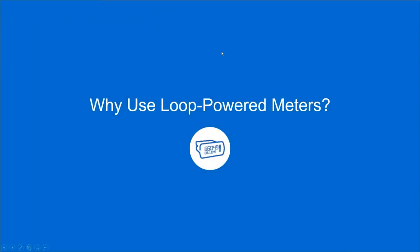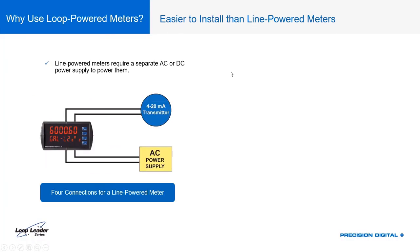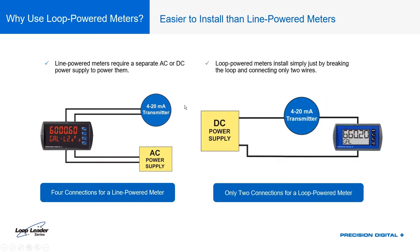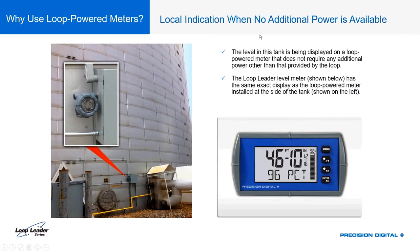Why do people use loop power meters? The most important reason is that they're easier to install than line power meters. A line power meter like the ProView has a 4-20 milliamp input but requires a separate AC or 24-volt power connection — making it a four-wire meter. By contrast, a loop power meter lets you just break the loop wherever you want to put the meter and connect those two ends directly. There's less wiring and fewer parts involved.